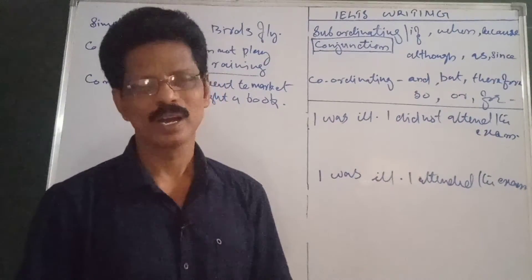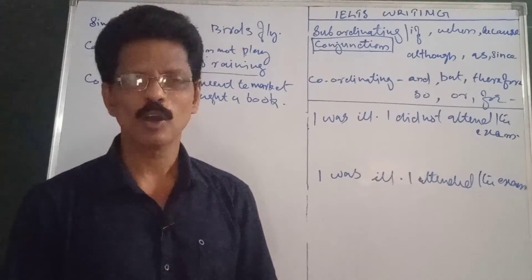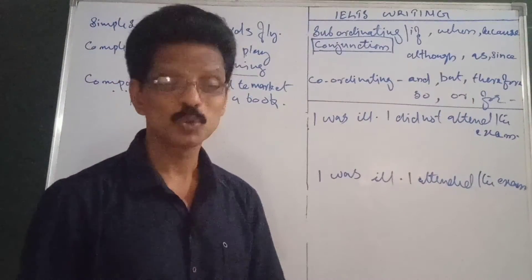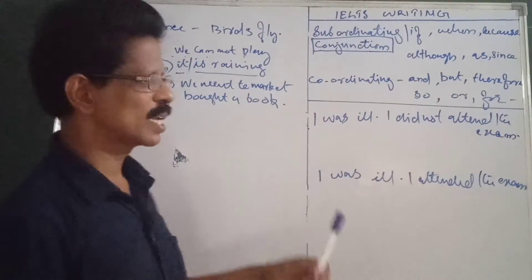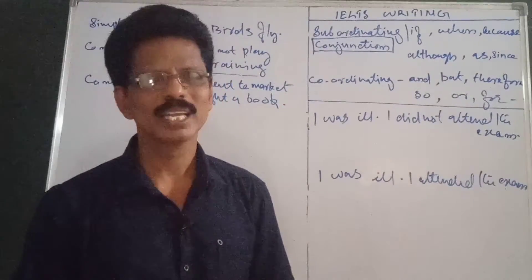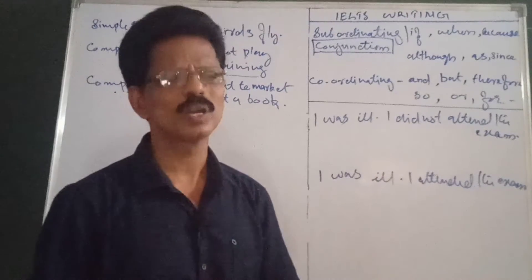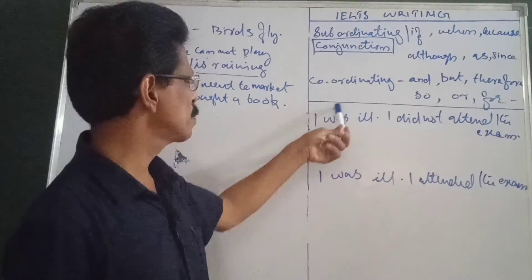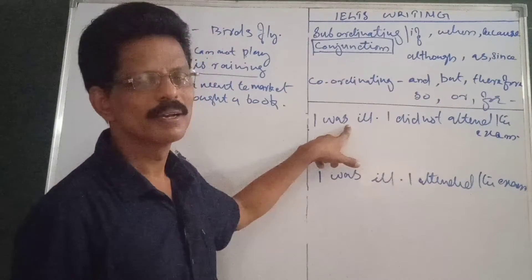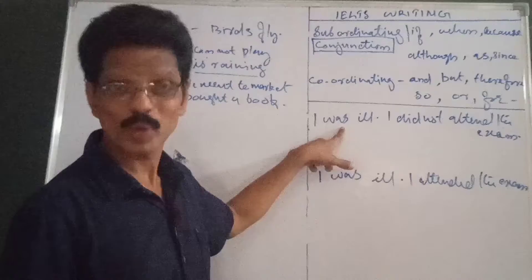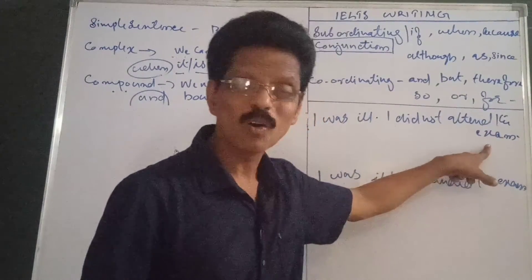Number five: perfect participle — 'having' plus V3: 'having gone,' 'having seen,' 'having understood.' In many ways a verb can be changed into non-finite. Now applying this: 'was' is a finite verb and should be changed into non-finite. Since 'was' is a form of 'be,' adding '-ing' gives 'being.' So: 'Being ill, I did not attend the examination.' That is the simple sentence form.